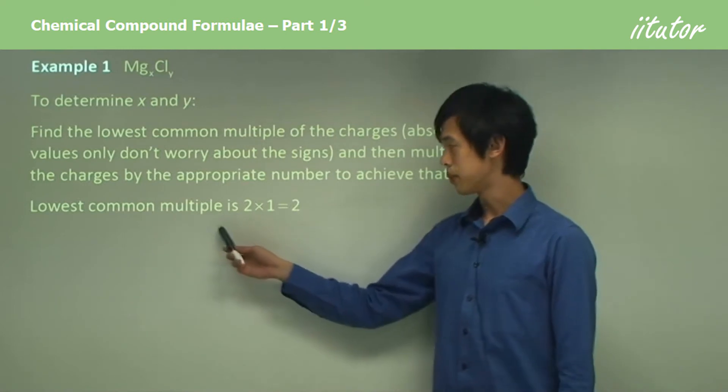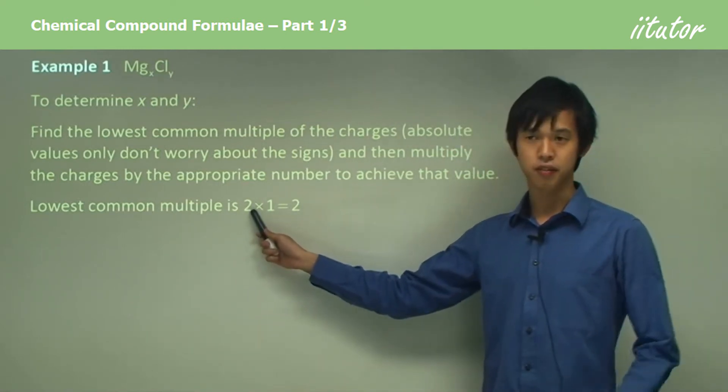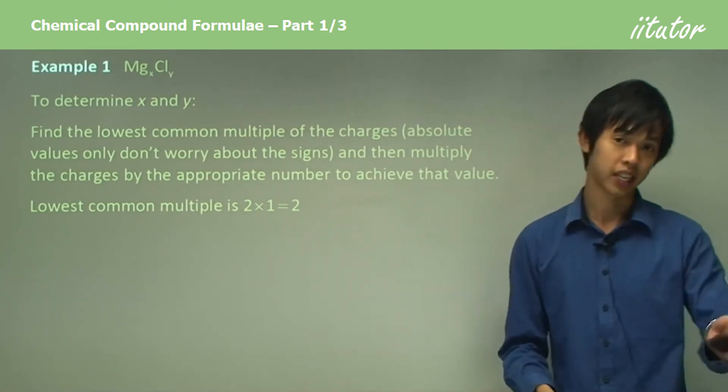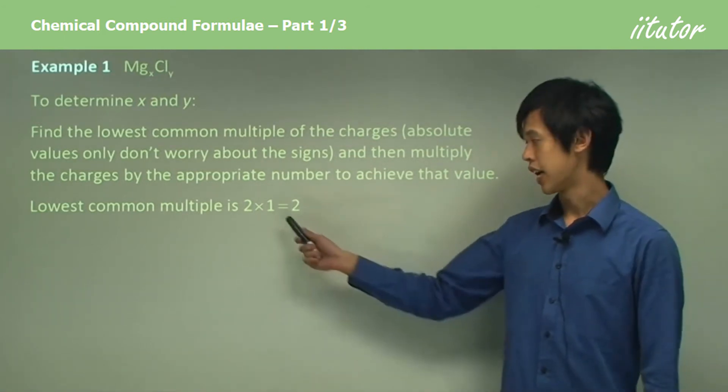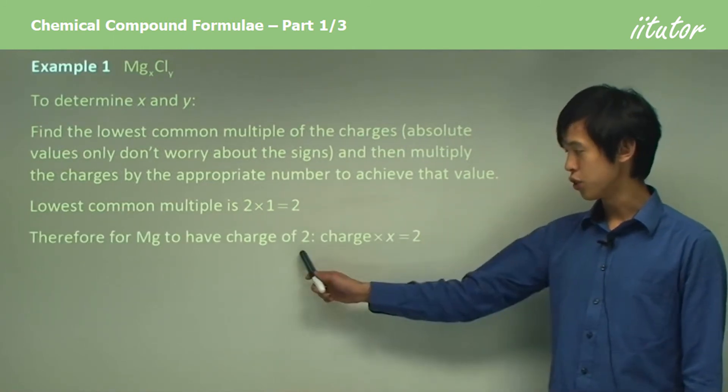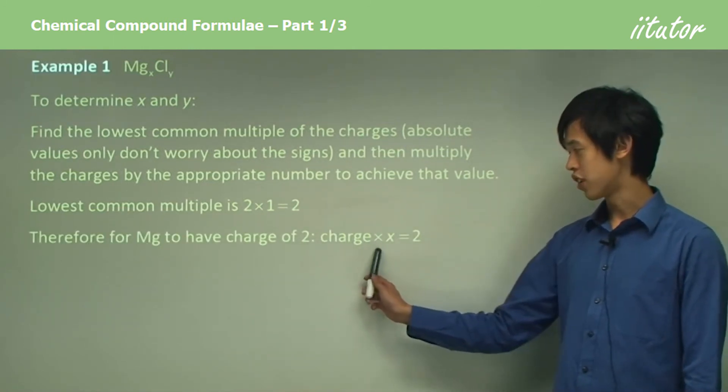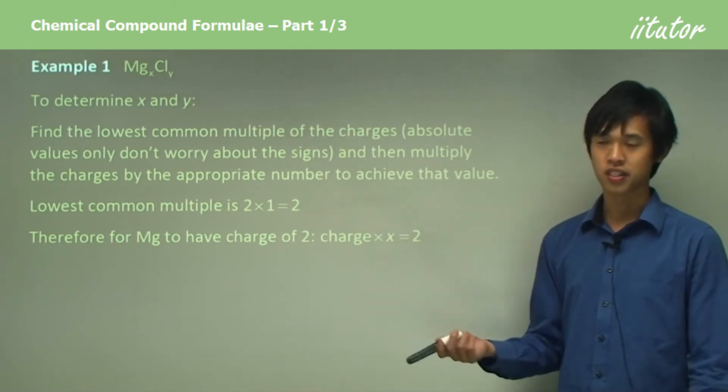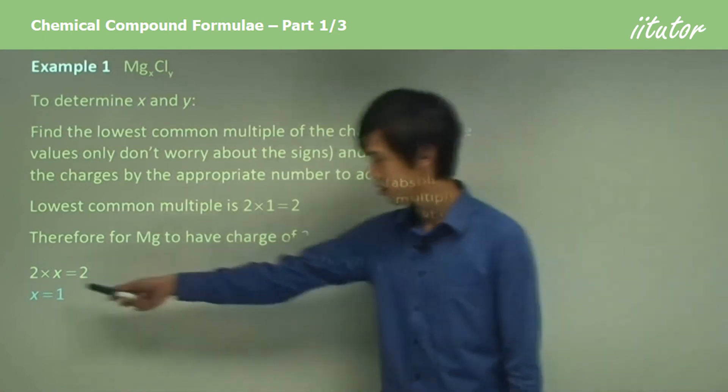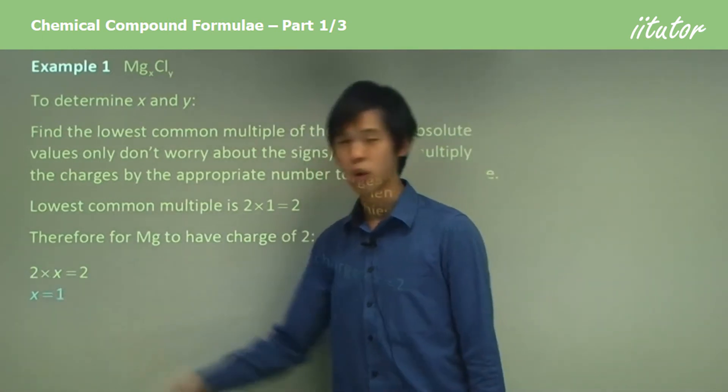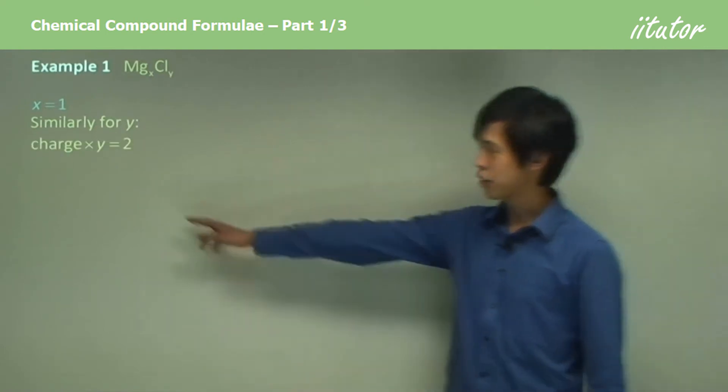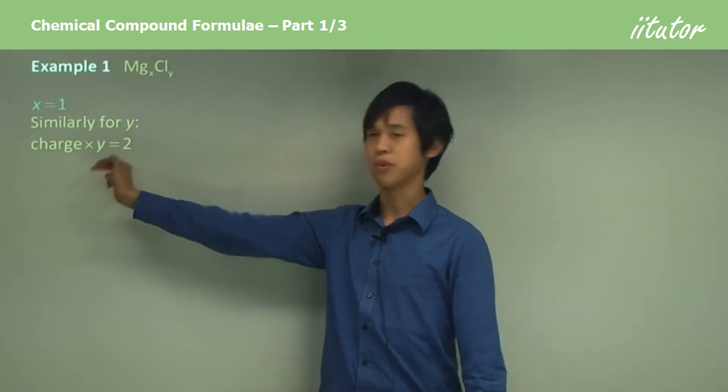The lowest common multiple - we had magnesium has a valency of two and chlorine has a valency of one, or negative one, but we're taking the absolute value so it's just one - so the lowest common multiple is two. For magnesium to have a charge of two, it's charge times x equals two. So obviously the charge is two, so x equals one. We know the charge is two and x has to be one in order for that to equal two.